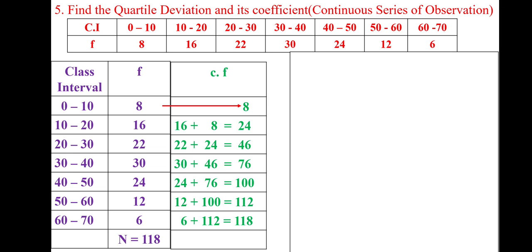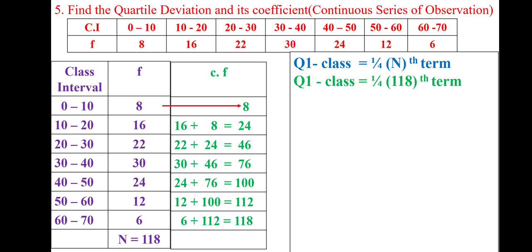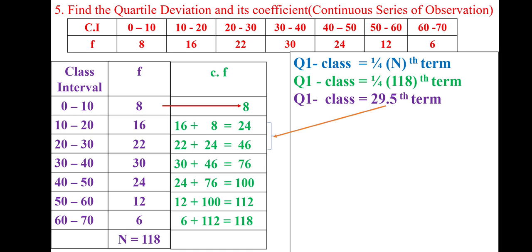So the n value is correct. This is a continuous class interval, so we need to find out Q1 class — similar to how we find the median class. Here we find Q1 class and Q3 class. Q1 class is found as 1/4th of the nth term. n is 118, so we substitute 118 divided by 4, giving 29.5. 29.5 lies between cumulative frequencies 24 and 46. The maximum value is considered, so that row is called the Q1 class. Q1 class equals 20 to 30.